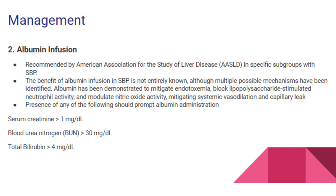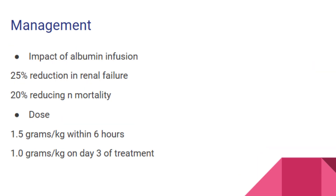Presence of any of the following should prompt albumin administration: serum creatinine more than 1 mg/dL, blood urea nitrogen (BUN) more than 30 mg/dL, or total bilirubin more than 4 mg/dL. The impact of albumin infusion includes a 25% reduction in renal failure and a 20% reduction in mortality. Dose: 1.5 grams/kg within 6 hours, and 1.0 grams/kg on day 3 of treatment.